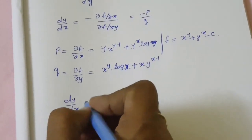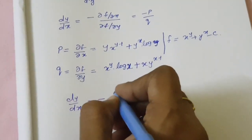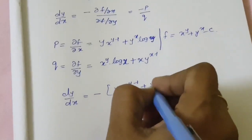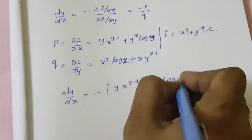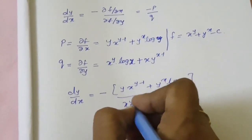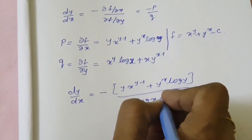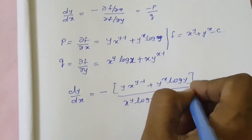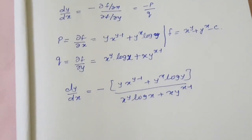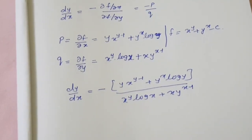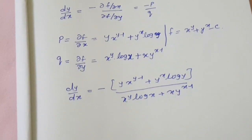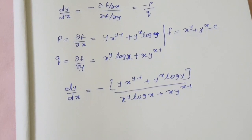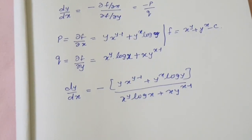So dy by dx equals minus of (y into x power y minus 1 plus y power x into log y) divided by (x power y into log x plus x into y power x minus 1).